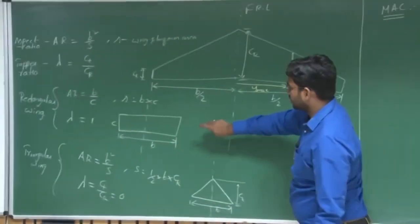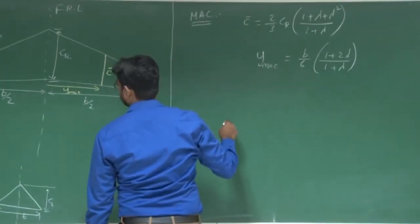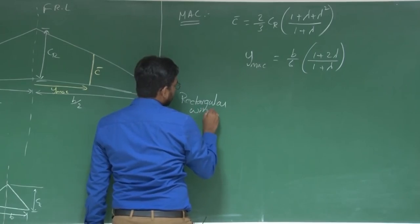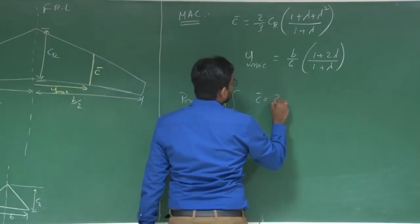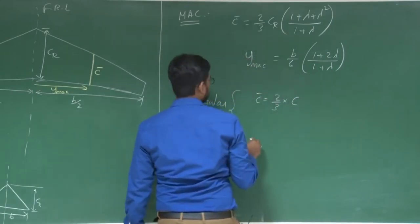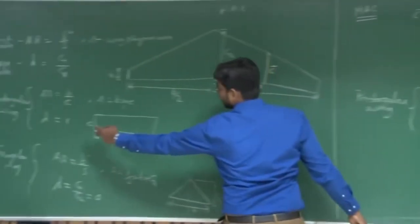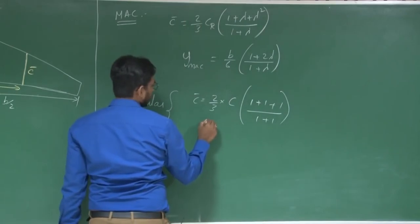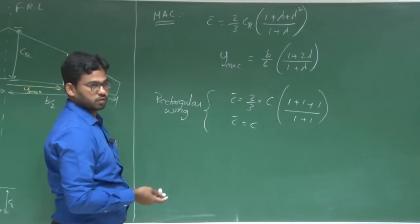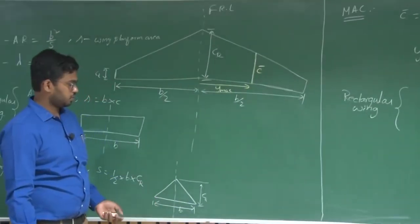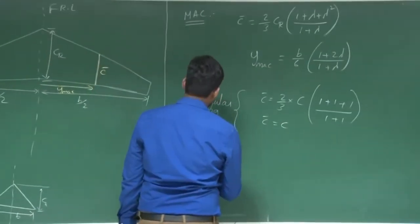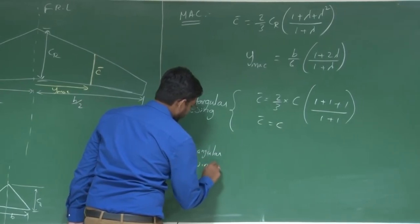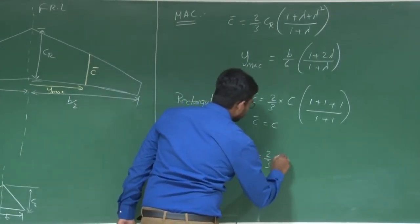For a rectangular wing, λ = 1. Substituting into the MAC equation gives C̄ = C, which is simply CR = CT. For a triangular wing, λ = 0, which gives C̄ = (2/3)·CR — two-thirds of the root chord.